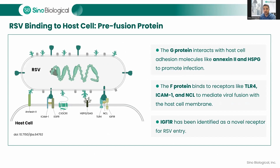RSV enters host cells through the binding of its surface proteins — mainly G and F proteins — to host cell receptors. The G-protein interacts with host cell adhesion molecules like annexin-2 and heparan sulfate proteoglycans (HSPG) to promote infection. CX3C chemokine receptor 1 (CX3CR1) and epidermal growth factor receptor (EGFR) also play roles in facilitating RSV entry. The F-protein binds receptors like TLR4, ICAM-1, and nucleolin (NCL) to mediate viral fusion with the host cell membrane.